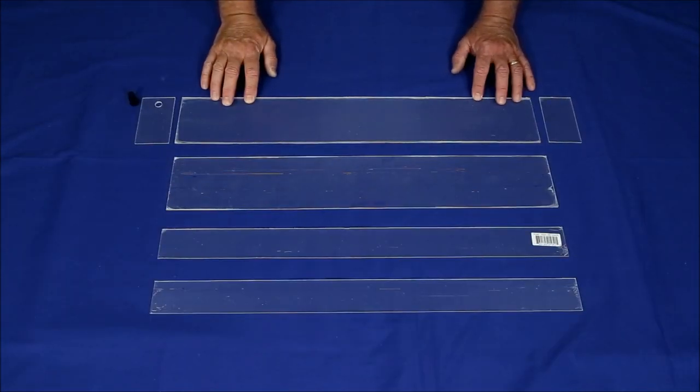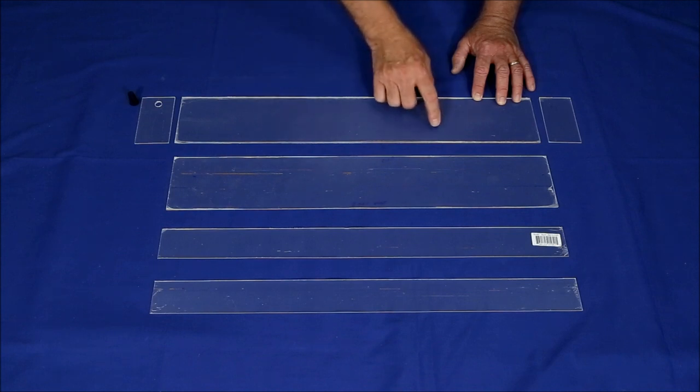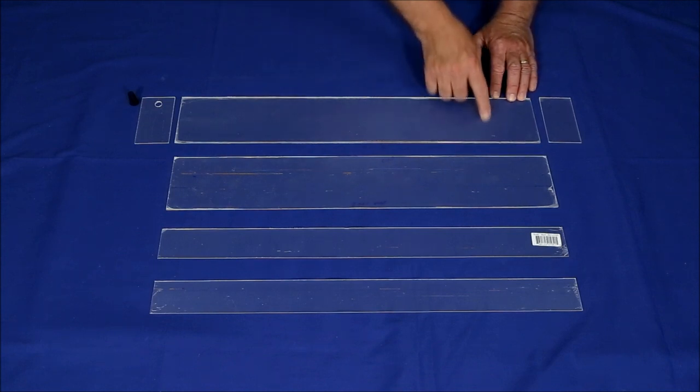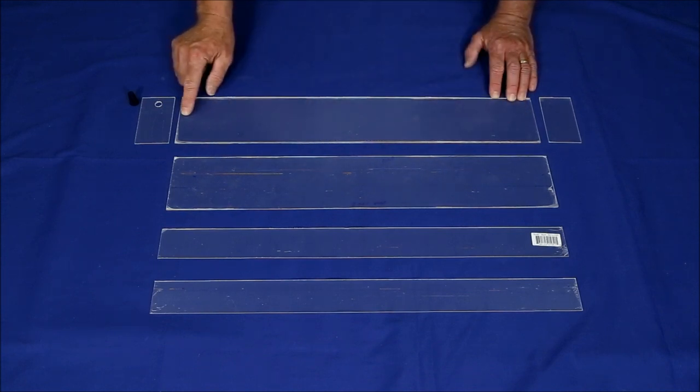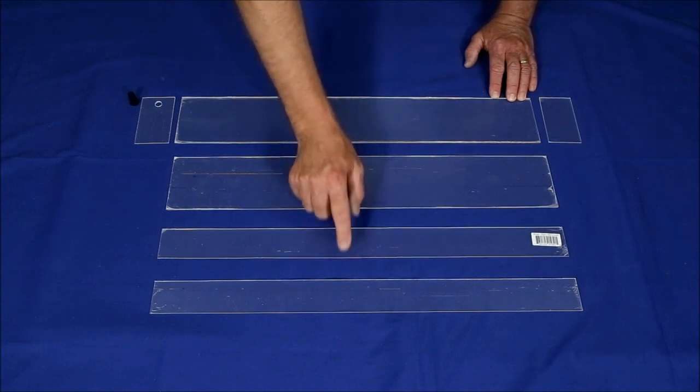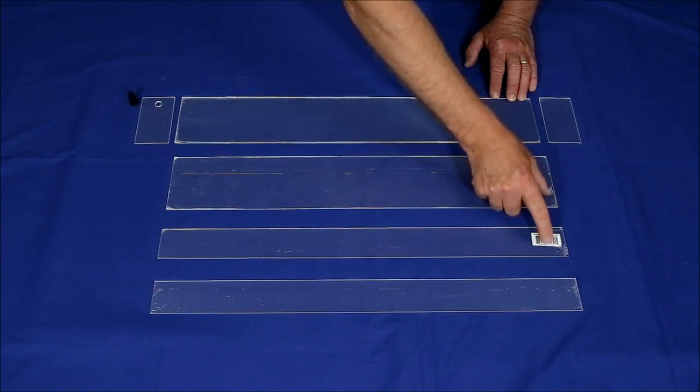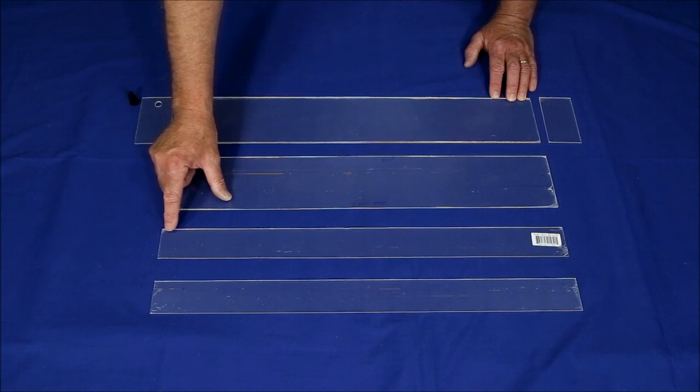Cut the plexiglass into six pieces. You'll need two side panels that are four inches tall and 24 inches long, a bottom and top plate which will be two inches wide and again 24 inches long.